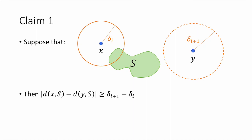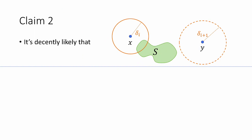Now I'm going to make two claims. The first claim: suppose the nice situation holds where S intersects the ball of radius delta_i around x but is disjoint from the open ball of radius delta_{i+1} around y. Then the difference d(x,S) minus d(y,S) is at least delta_{i+1} minus delta_i. This holds since d(y,S) is at least delta_{i+1} while d(x,S) is at most delta_i. The second claim, where probability comes in, is that this nice situation occurs with decent probability over the random choice of S.